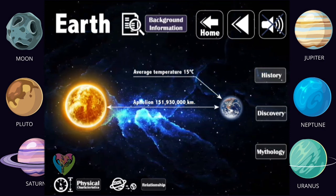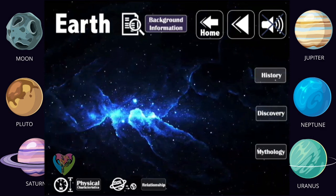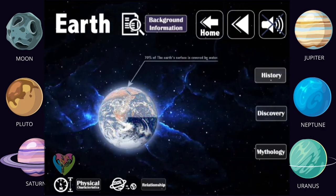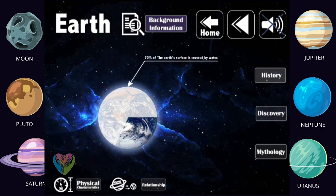And the Earth has water, which is the vital element for all living things. 70% of the Earth's surface is covered by water.